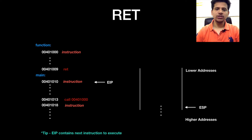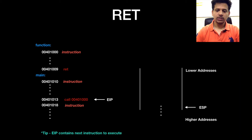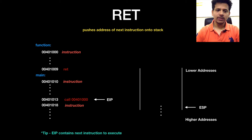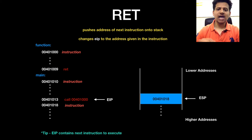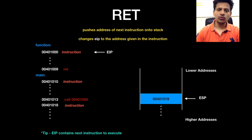Let's execute some instructions. Now EIP is pointing at the call instruction. As we saw in the last video, when call gets executed, first it pushes the next instruction address onto the stack. So 00401018 will be pushed onto the stack, and then EIP will change its address to the address given in the call instruction — EIP will move to 00401010.